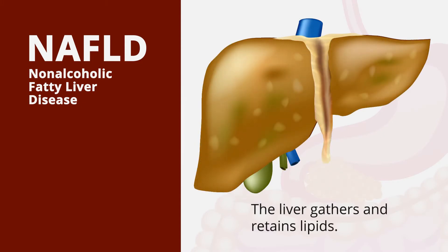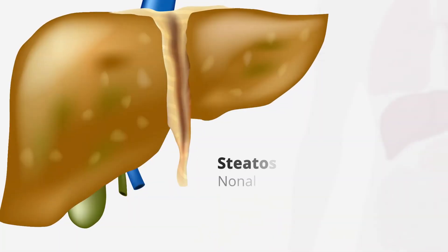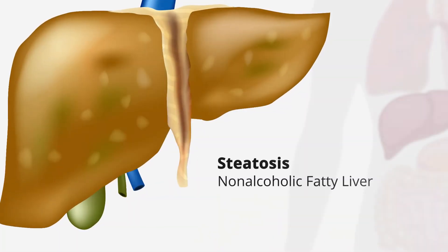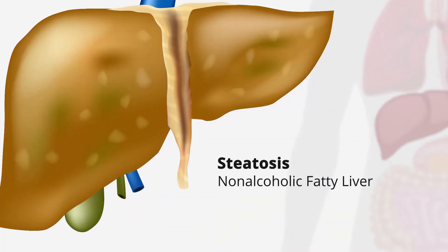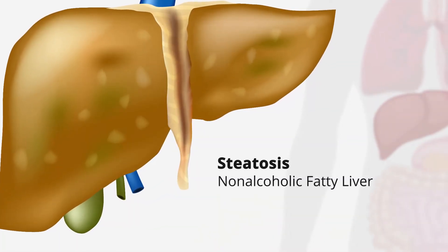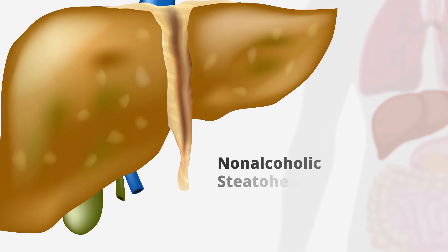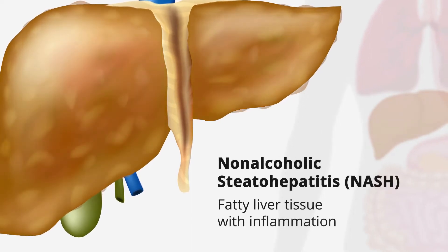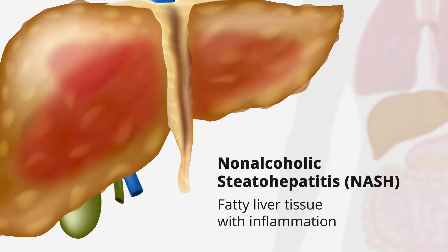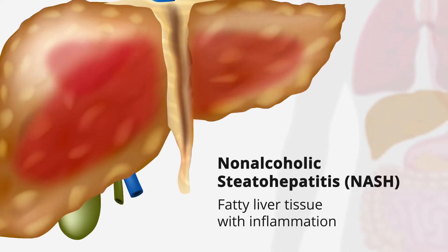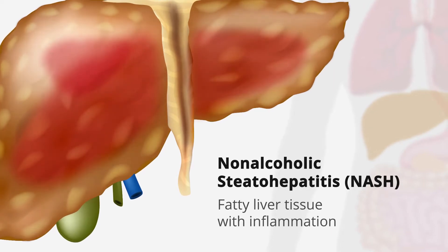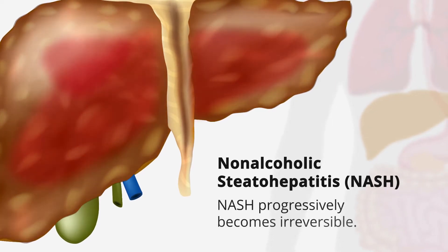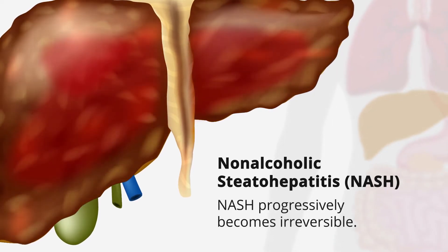There are two types of non-alcoholic fatty liver disease. The first type is non-alcoholic fatty liver, in which the liver is simply fatty. The second type is non-alcoholic steatohepatitis, in which the liver begins to have inflammation. This is more serious. NASH progressively becomes irreversible.